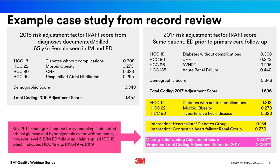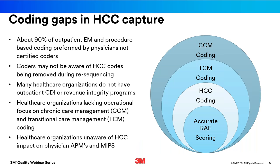This is a common finding when reviewing organizations' data — providers are really caring for these patients, but the documentation isn't translating into the codes. There are known coding gaps: chronic care management, transitional care management, and HCC coding gaps exist partly because 90% of outpatient facilities have providers coding their own documents for E&M, when it is really coders who are the experts in coding. Providers are expert in giving and documenting care; coders should be involved to ensure complete and accurate capture.